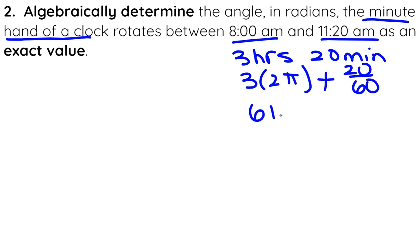So that's going to be 6π plus, in lowest terms, one third of a rotation, and one rotation is 2π. So it's doing 6π plus 2π/3.